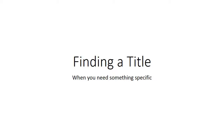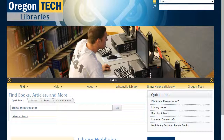Welcome to this presentation on how to find a specific title. Sometimes people are assigned assignments where they need to find something within a specific journal or they're looking for a specific book. First, go to the library homepage at www.oit.edu/libraries.